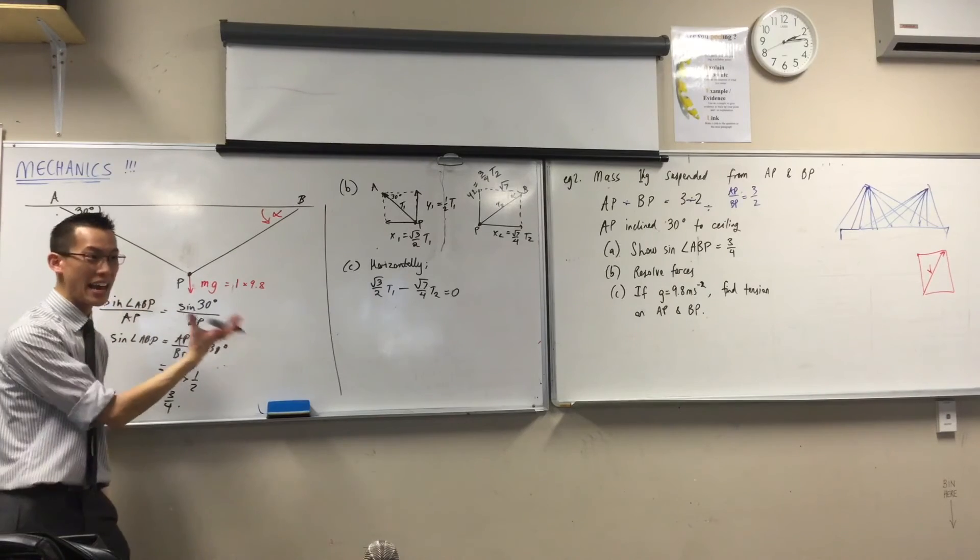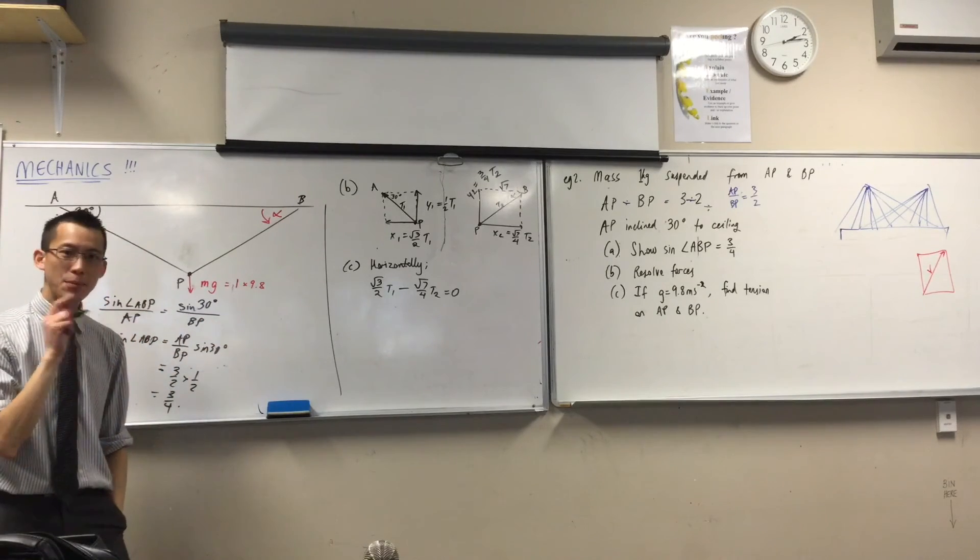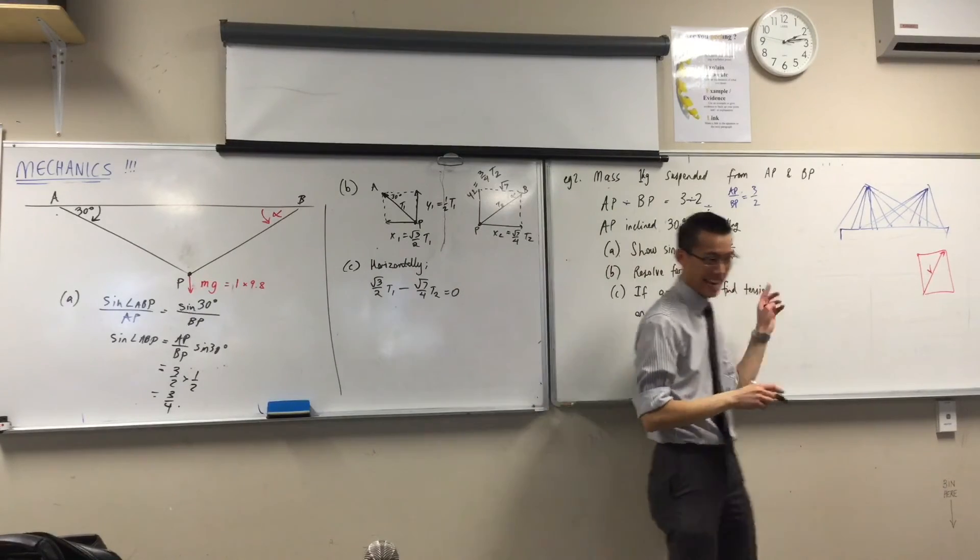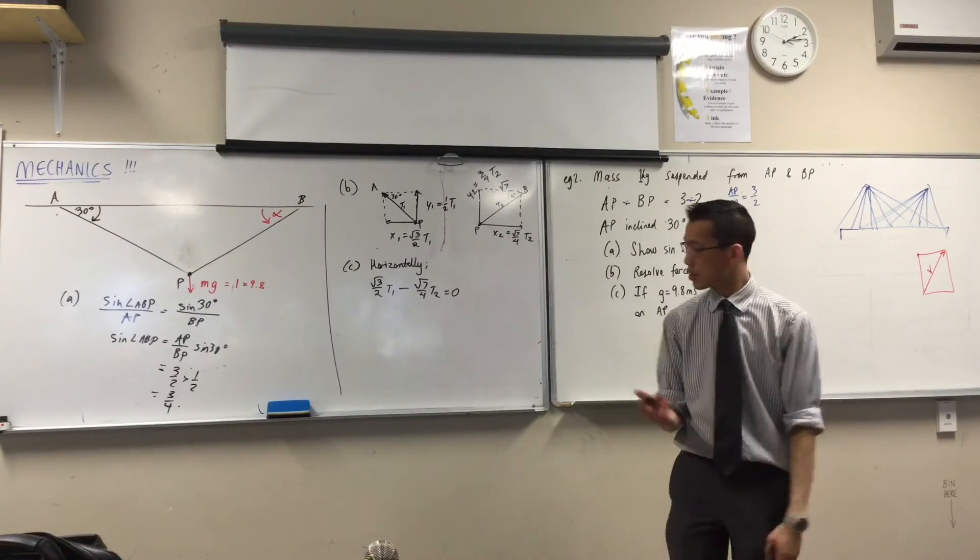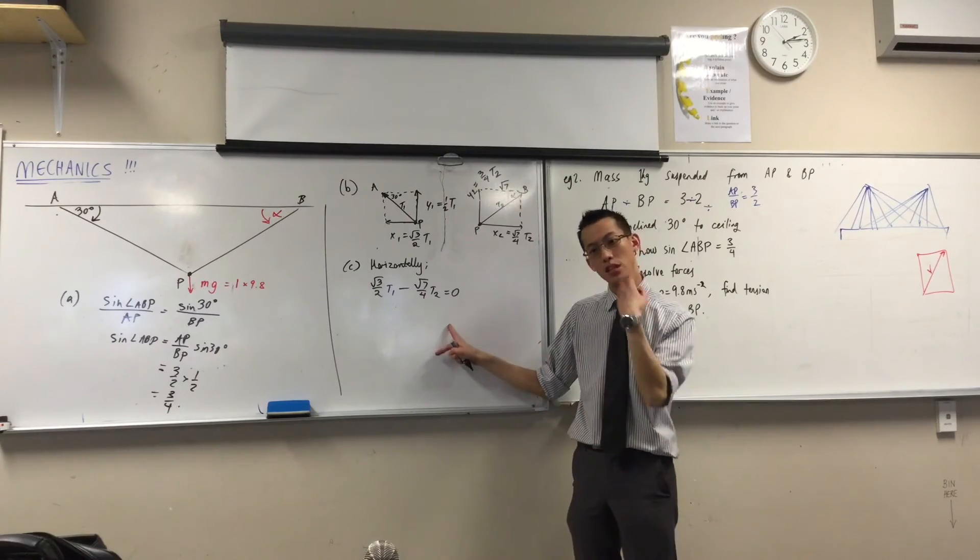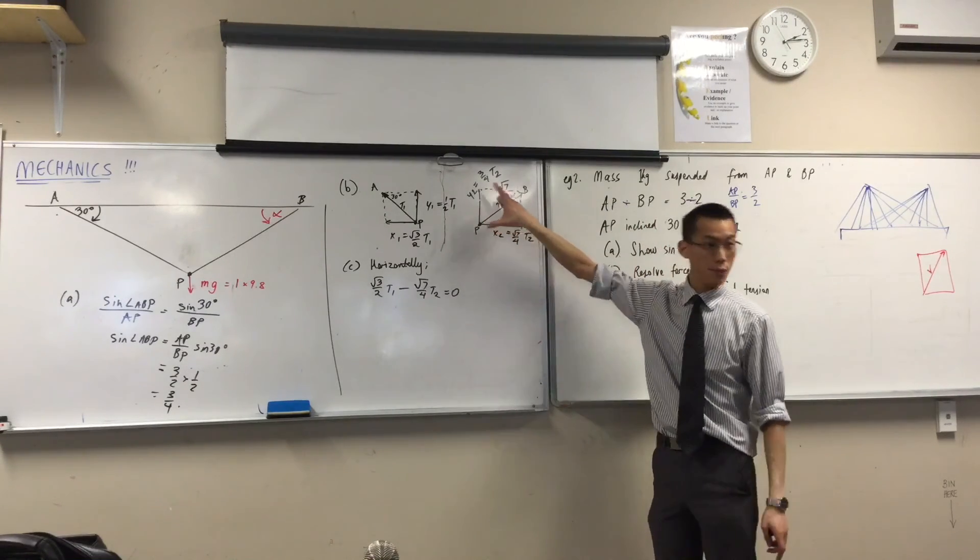Now I could use that as my equation, but I happen to know, look at where I'm going. You see, I'm going to have to find both of these tensions, T1 and T2. So I've got two variables here in one equation.